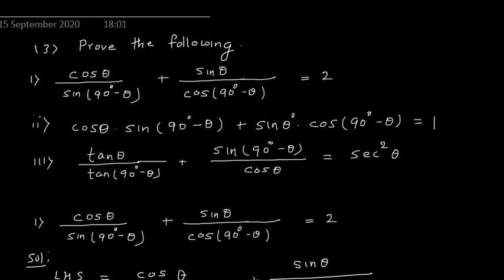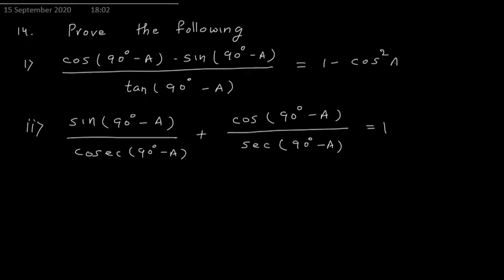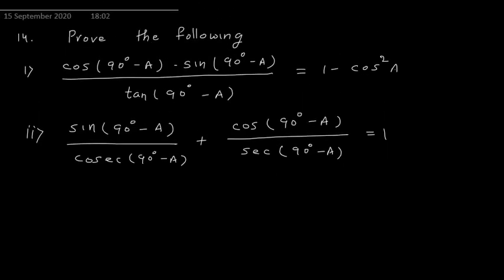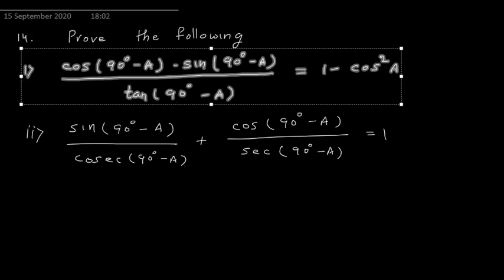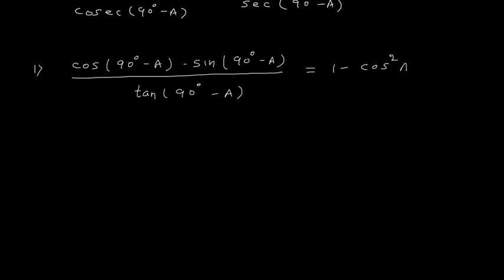All three questions of problem 13 are done. Now question 14 — prove the following. For question 1, LHS = cos(90° − A) × sin(90° − A) / tan(90° − A).